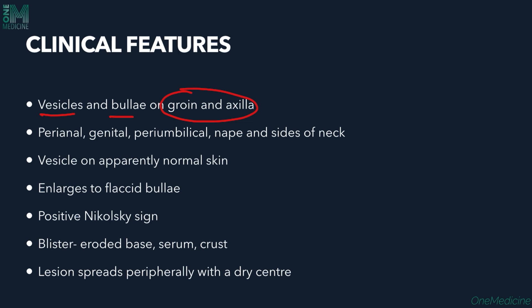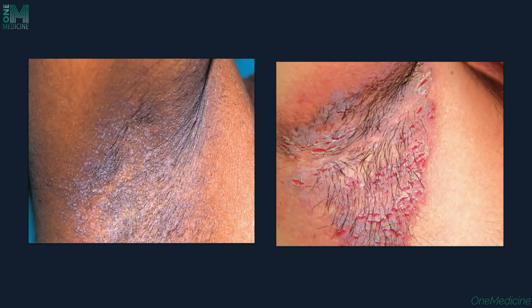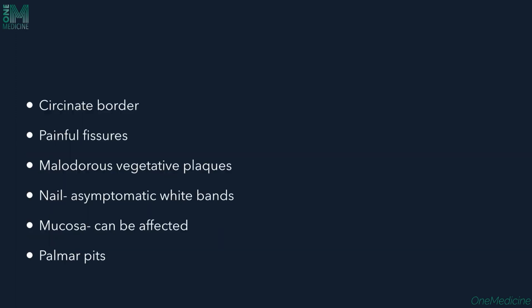Clinically, vesicles and bullae are seen. The characteristic site is the groin and axilla — the flexural areas. Other areas like the perianal region, genital area, periumbilical area, and nape and sides of the neck can also be affected. Vesicles appear on apparently normal skin, enlarge to form flaccid bullae, and Nikolski sign is positive. When blisters erode, the base produces serum and crusting occurs. Lesions spread peripherally with a dry center. Erosions are frequent in intertriginous areas.